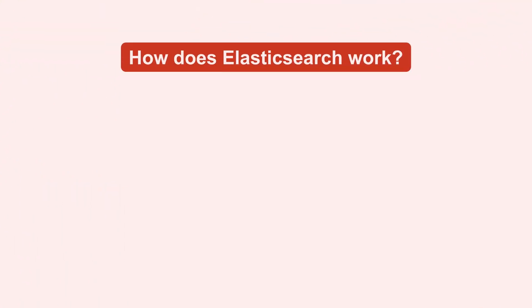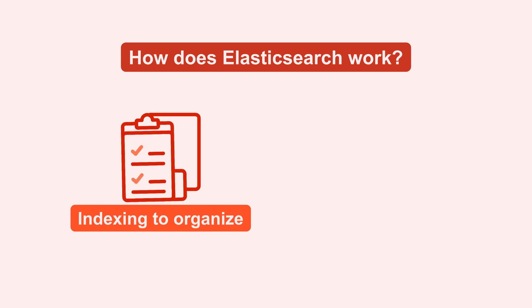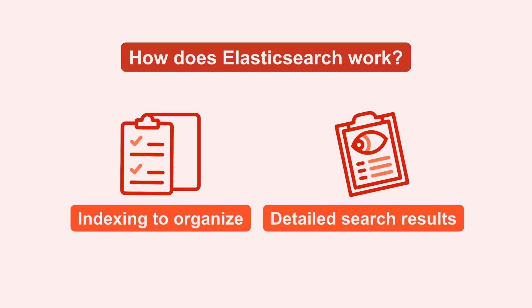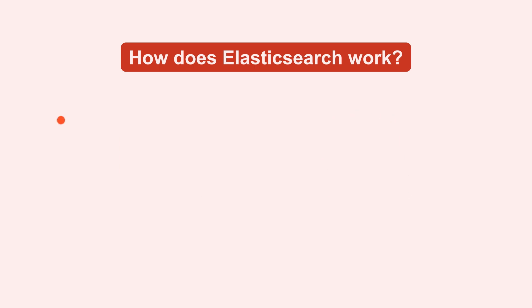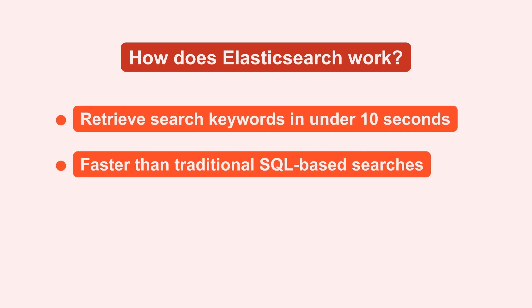Now, let's talk about how Elasticsearch works. It uses indexing to organize and retrieve data quickly, providing users with detailed search results and summaries. It's a powerful tool that can retrieve search keywords in under 10 seconds, making it faster than traditional SQL-based searches.